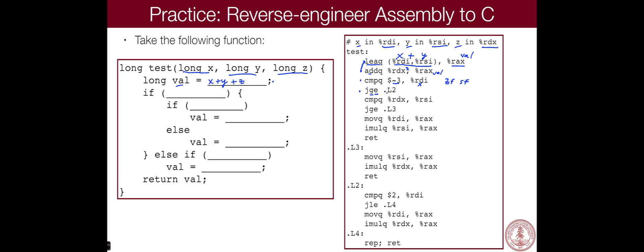Let's look where it's jumping. It's jumping to this label L2. That's way down here. So if RDI, if X is greater than or equal to negative three, we're going to jump all the way down here.